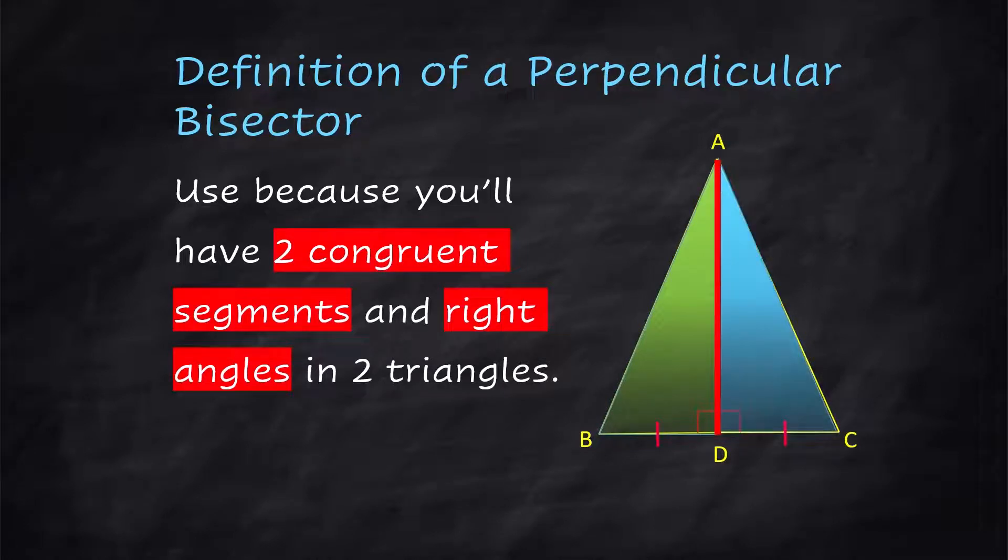You're starting out with this big triangle with a bisector in the middle, but you're going to prove that these two triangles are congruent to each other. At least that's the question that you'd be asked when this pops up.